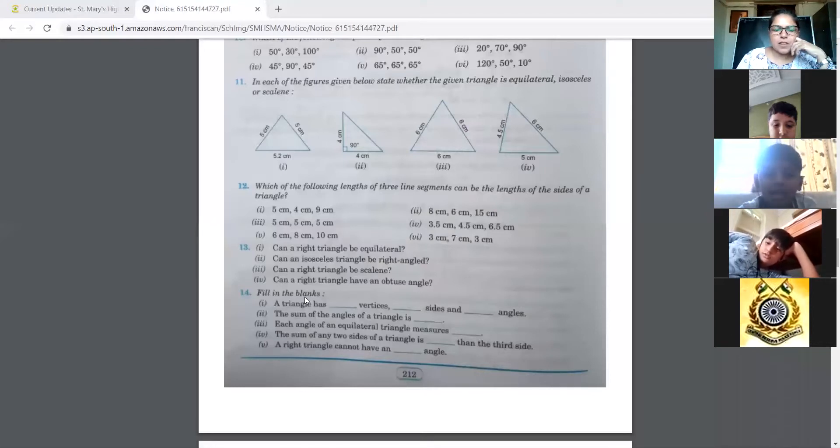Then you have fill in the blanks. A triangle has dash vertices, dash sides, and dash angles. You know this. The sum of the angles is how much? You know this. Each angle of an equilateral triangle measures how much? This I already told you.